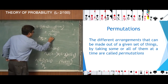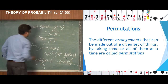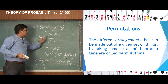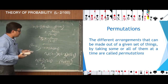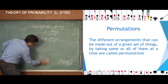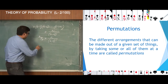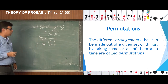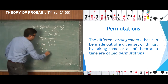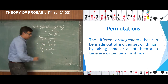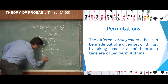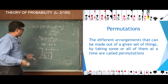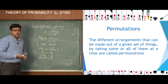So nPr equals n factorial divided by n minus r factorial. That is the formula used to find the number of ways of arranging n things by taking r at a time. Case 1: if we put r equal to 0, then nP0 equals n factorial divided by n factorial, which equals 1. So nP0 is always equal to 1 — there is only one way of arranging n things by taking none of them.